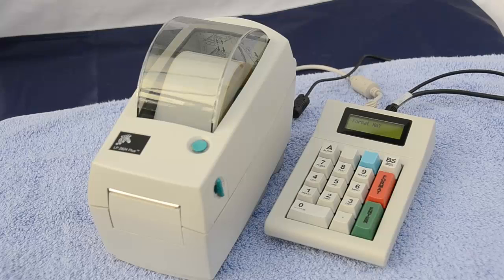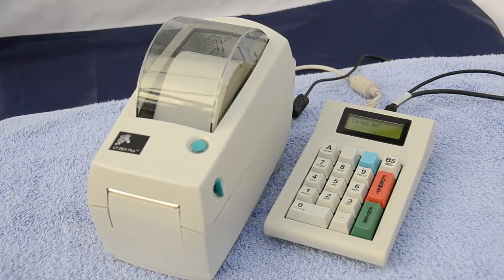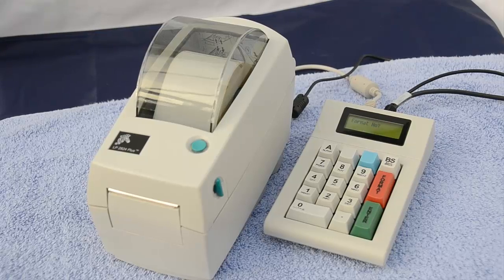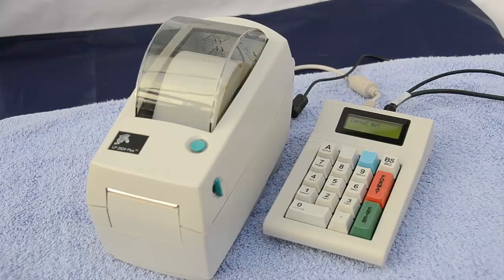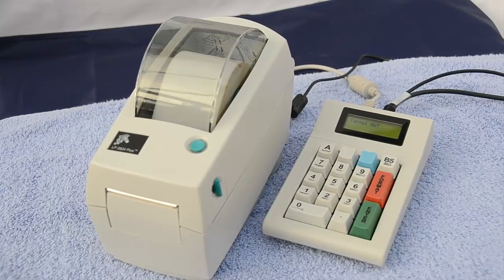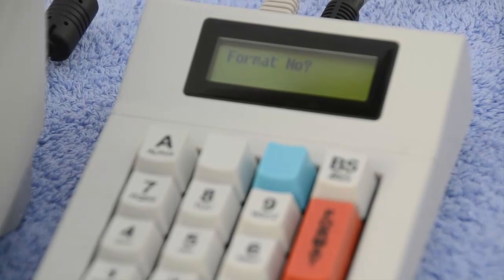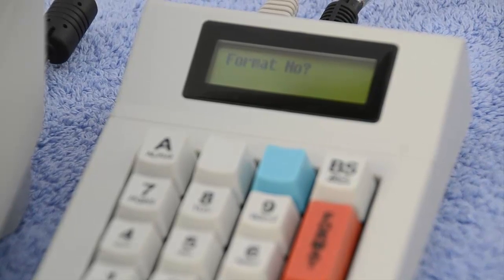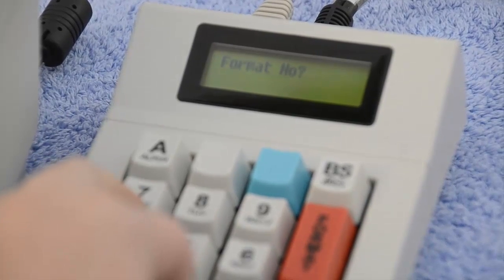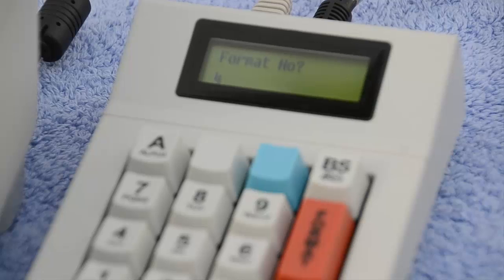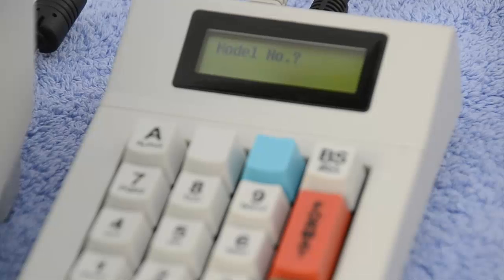The 950 keypad acts as the interface between the user and the printer and allows the stored label formats or templates to be quickly recalled and the required label type and number of labels can be used. In this example we are calling up an asset tag format which is format number 4. So number 4 is typed in, displayed on the second line and the enter button. It then collects the data.